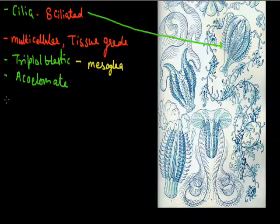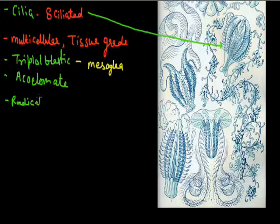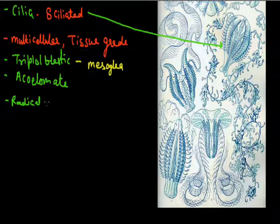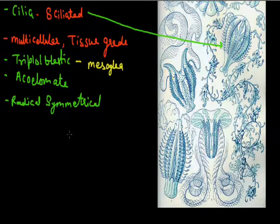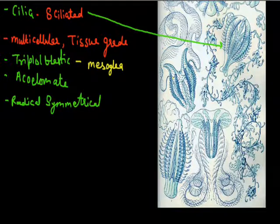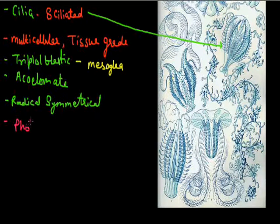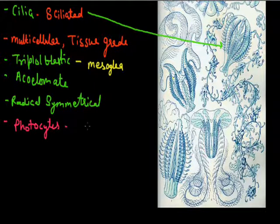These animals are radially symmetrical — they can be divided into two equal parts through their radius. Symmetrical means the animal body can be divided into two equal parts through a plane. These animals also have specific cells called photocyte cells.